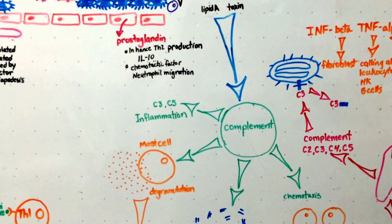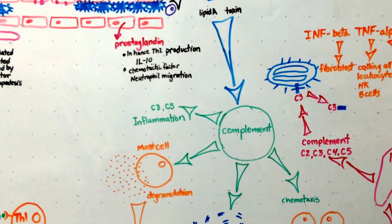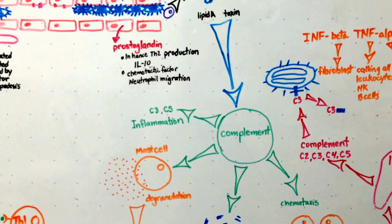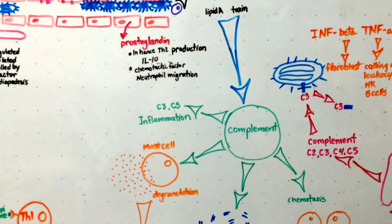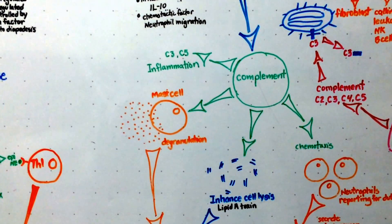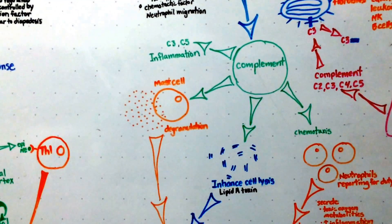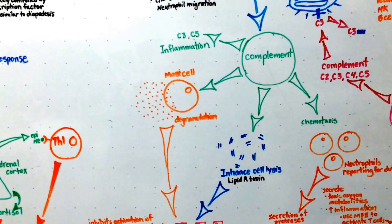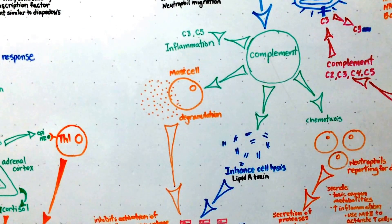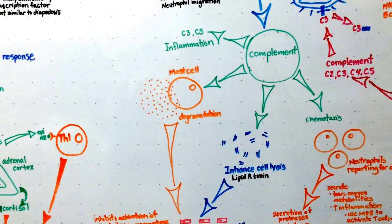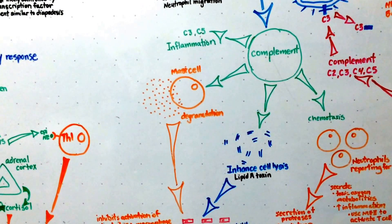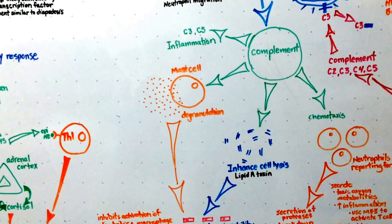So our complement system is releasing increased amounts of C3 and C5. That C3 is that death pathway, if you remember, and causes lysis of cells. Well, lysis of cells releases more lipid A. More lipid A causes further inflammation and vascular permeability. You can also see that the mast cells degranulate, causing inflammation and vascular permeability.